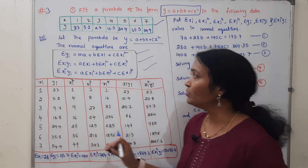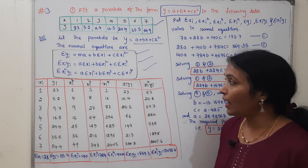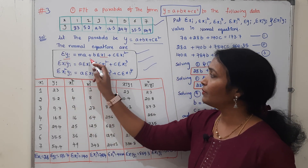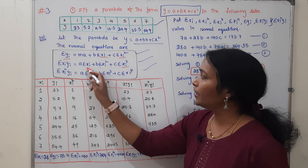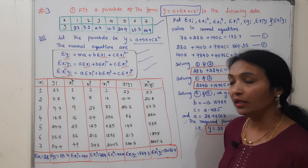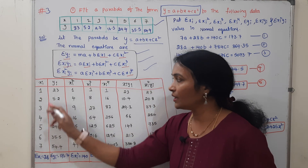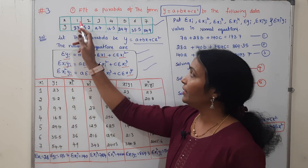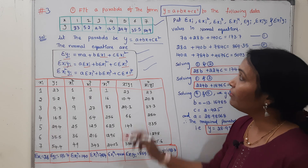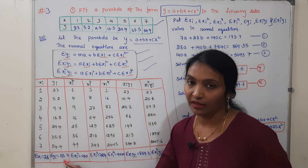First of all, I need to solve the parabola. I need summation xi, summation yi, summation xi², xi³, xi⁴, xi·yi, and xi²·yi. These values are needed. By using x and y, we can solve this in table format. xi values are 1, 2, 3, 4, 5, 6, 7. Summation xi is 28. The y values give summation yi equal to 173.7.